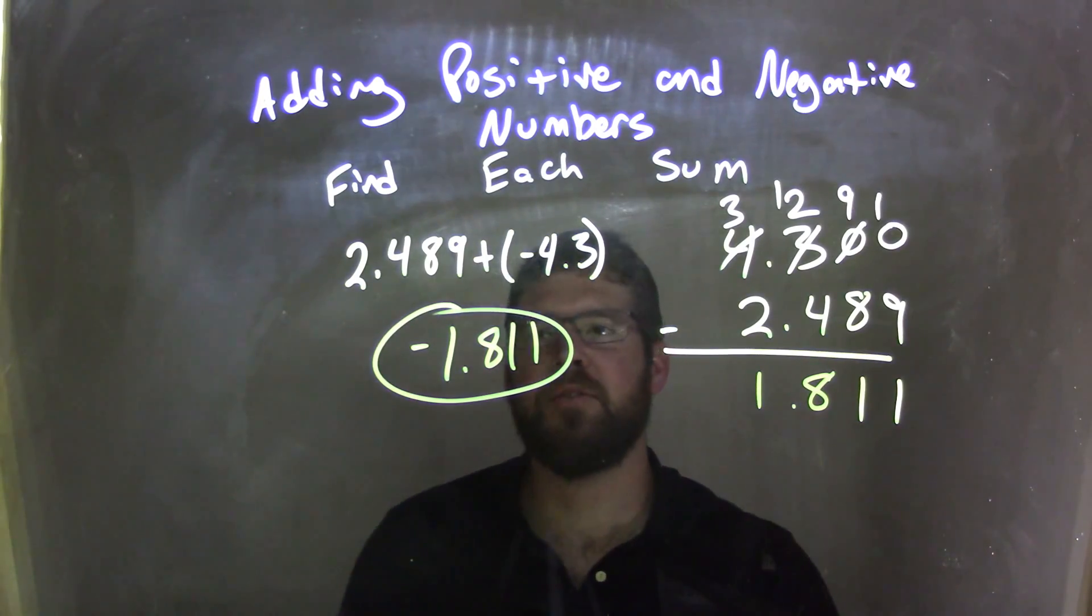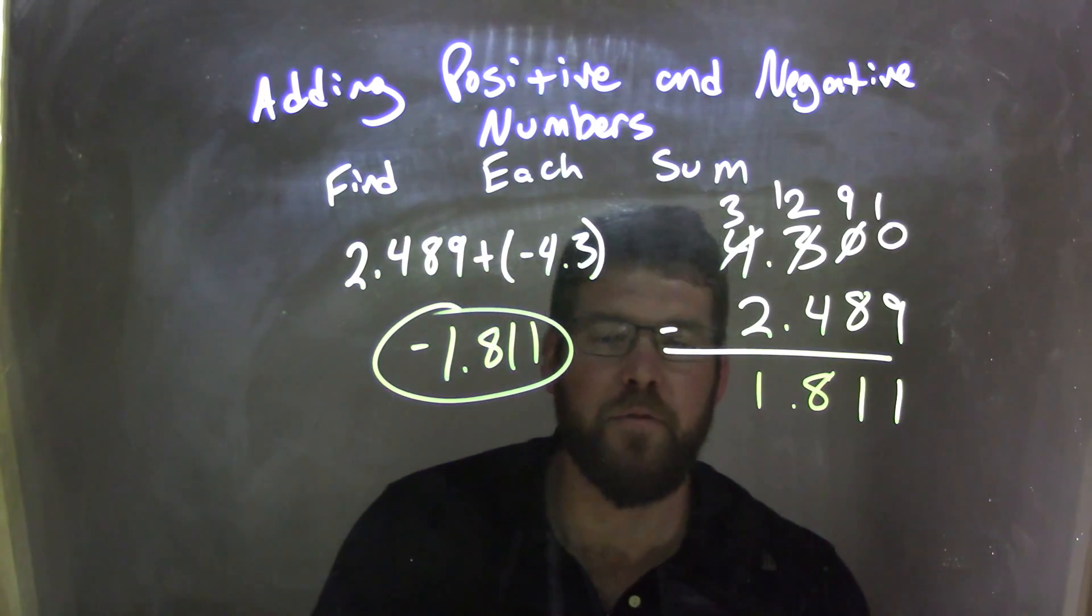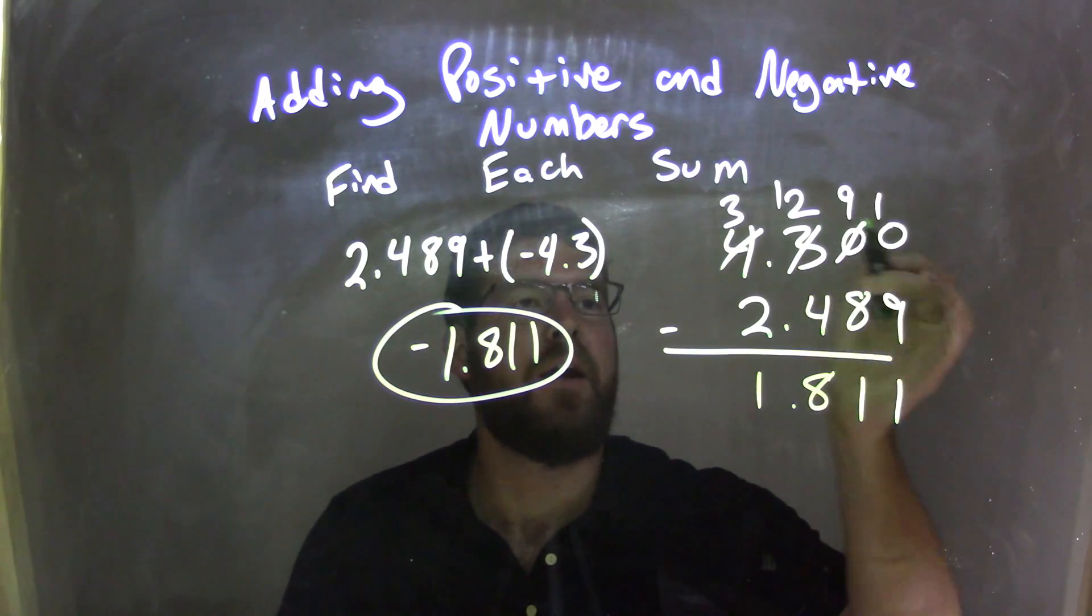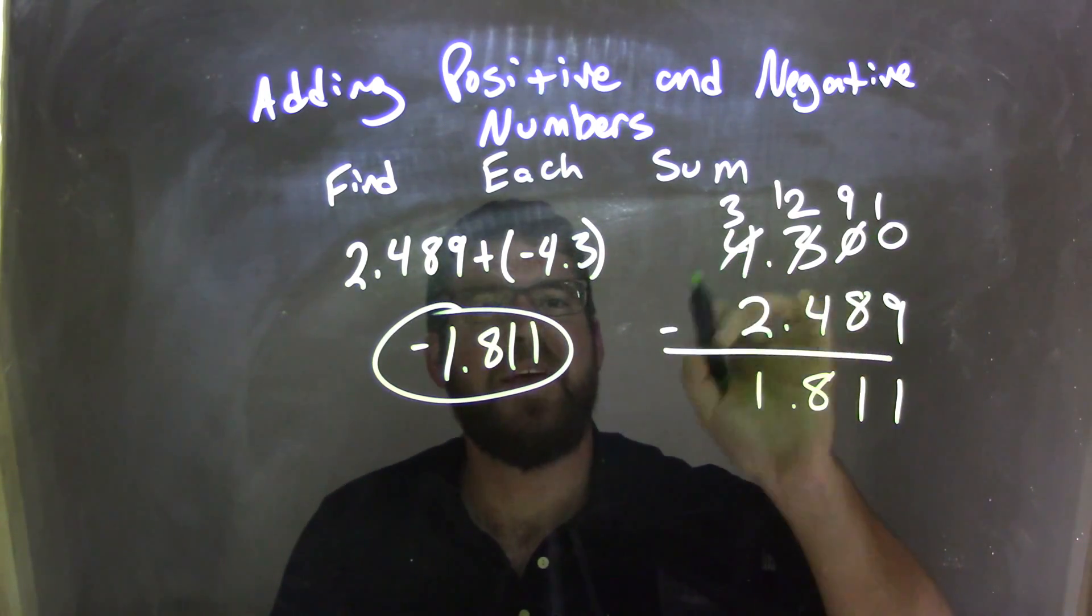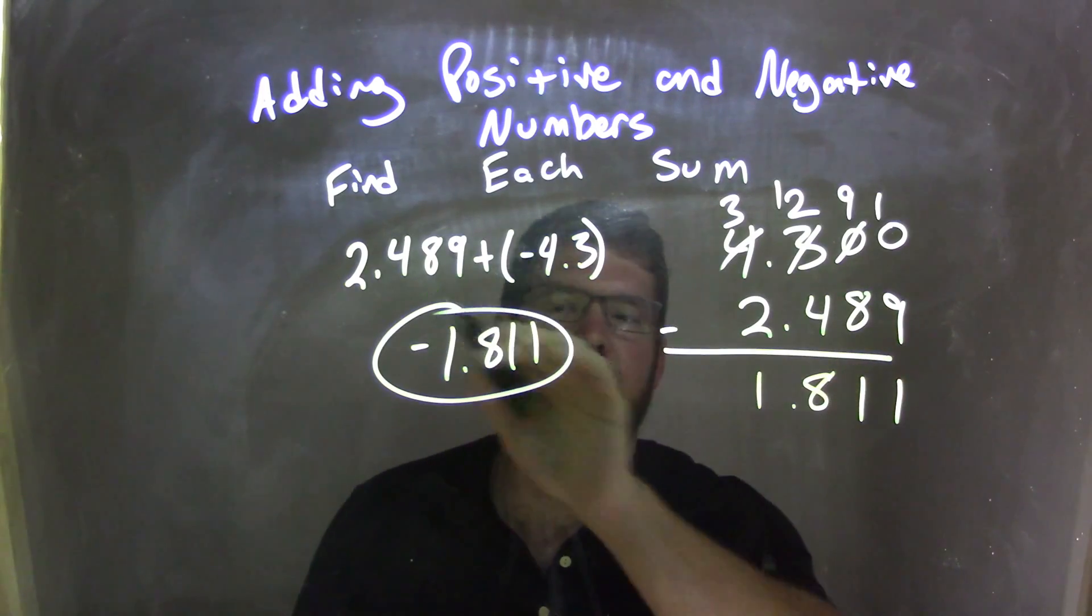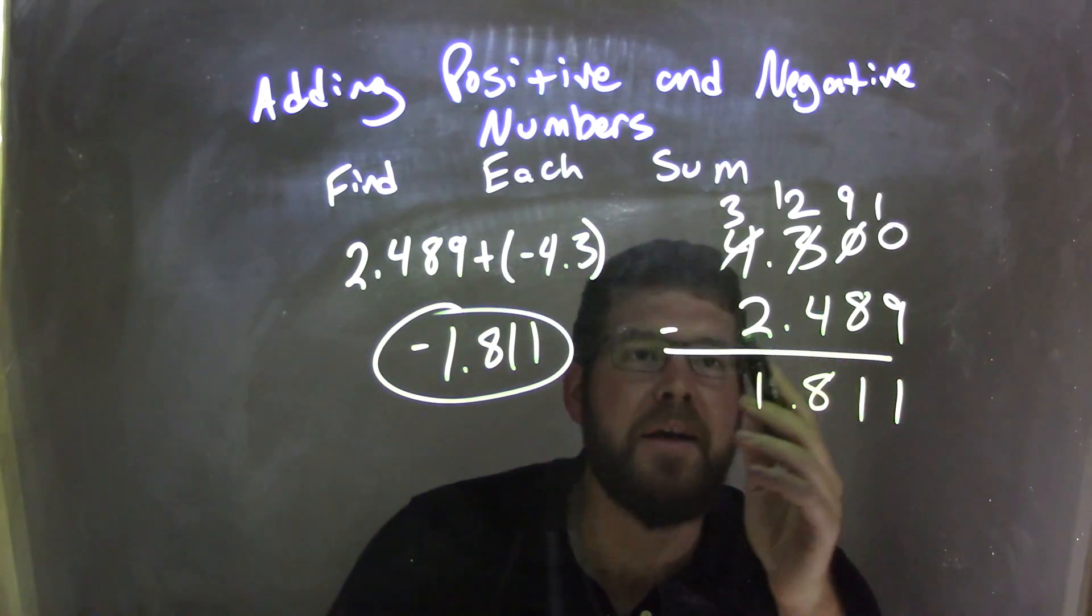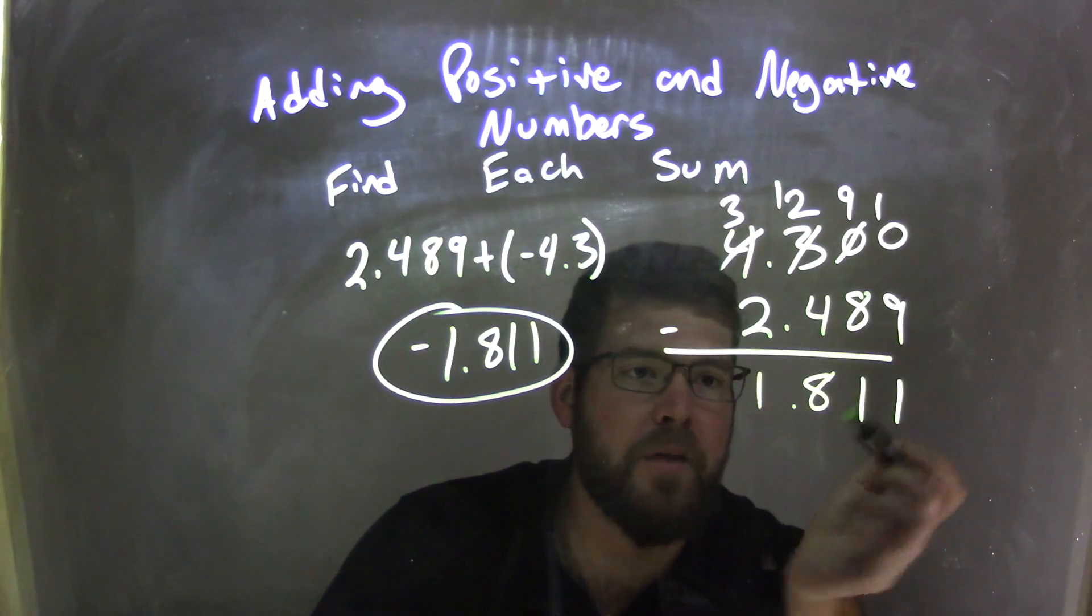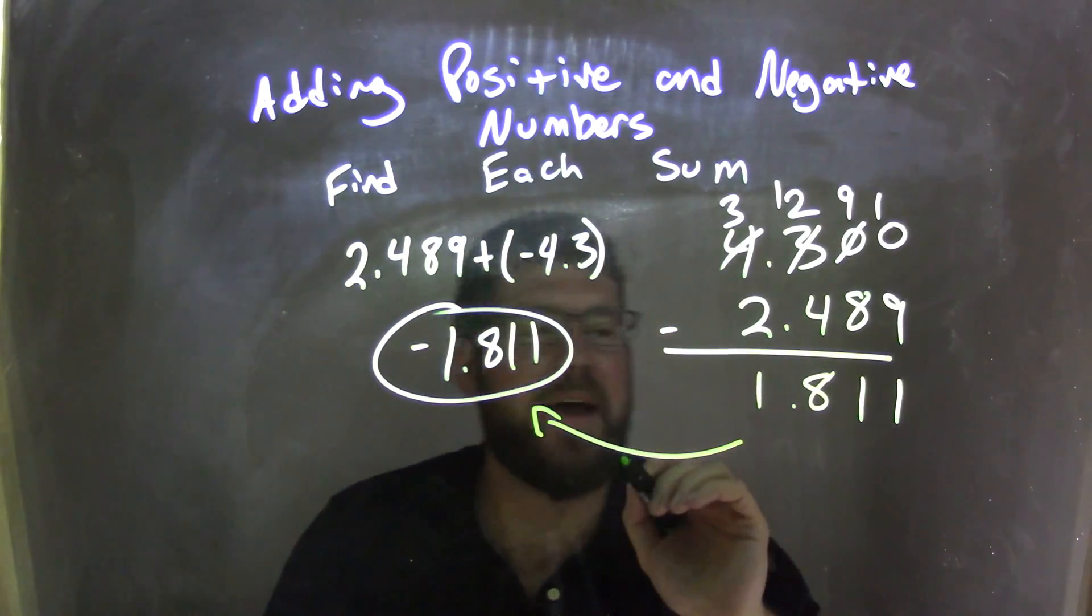So again, let's recap. I saw that it was 2.489 plus negative 4.3. Negative 4.3 had more weight, so I know my final answer is going to be negative. But using this method here, I had to put the large number first - so 4.300 with the zeros for the place values - and subtracted 2.489 from it. Knowing that my final answer in this case will be positive, but I will have to remake that to be negative.